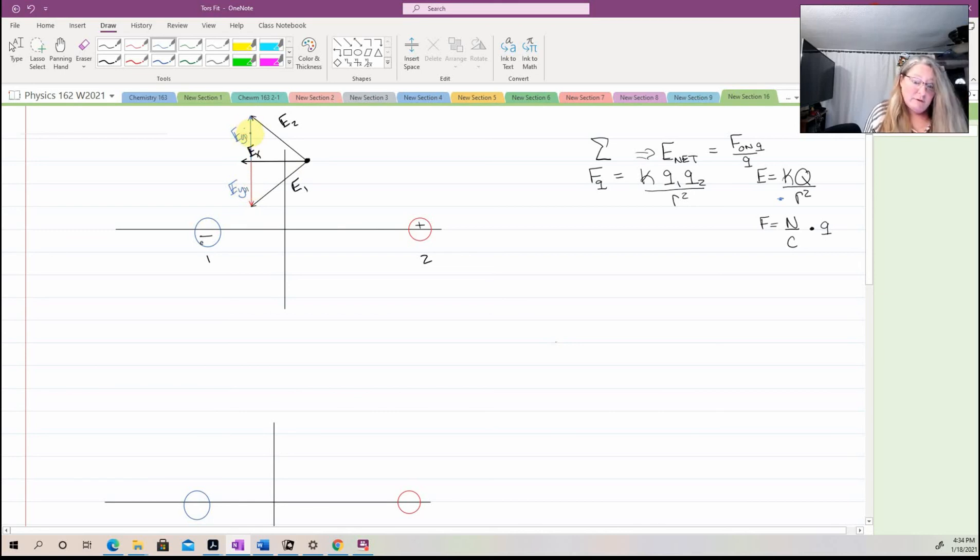Notice my E in the Y from 2 is positive. It's heading up. So it's the vector that makes it positive, not the sign on the charge. And the same with my E in the Y is negative because it's going down. My E in the X is negative for both because they're both heading towards the negative axes, at least how I've drawn it here. So in the end.